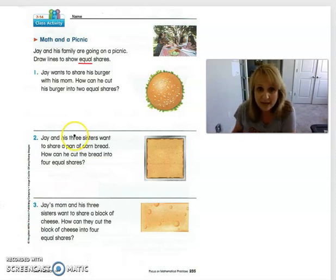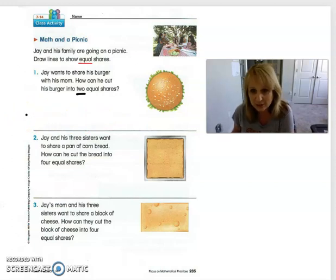Let's read about this hamburger right here and see how many pieces we need to cut it into. Jay wants to share his hamburger with his mom. How can he cut his burger into two equal shares? Okay, so think about that. A hamburger is just like a circle. If you can think back and remember, there were really only two ways to cut our circle into two equal shares. Would you pause the video for just a minute and cut your hamburger into two equal shares and then come back and check it with mine?